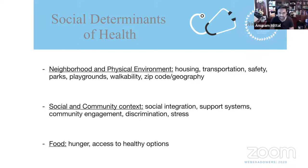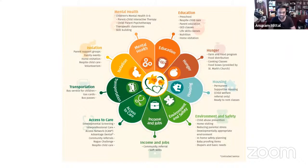Number five: social and community context — social integration, support systems, community engagement, discrimination, and stress. Number six: food — hunger and access to healthy options. These are the major six categories. Public health departments and various governments around the world break down social determinants essentially the same way, with some variations depending on where you are.